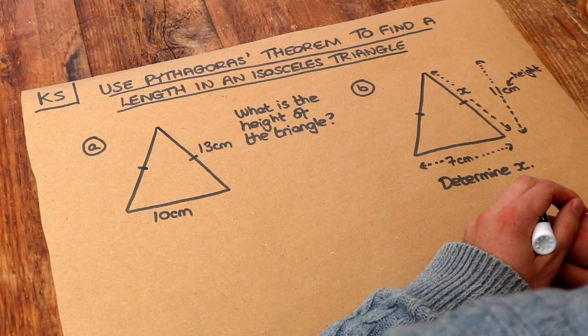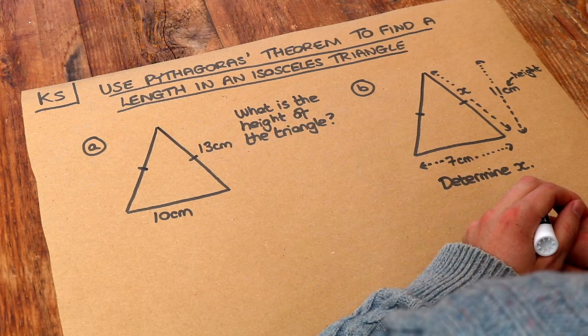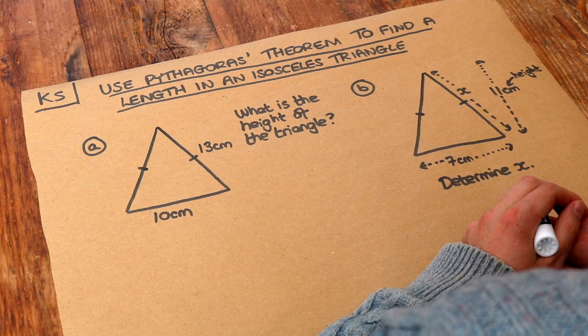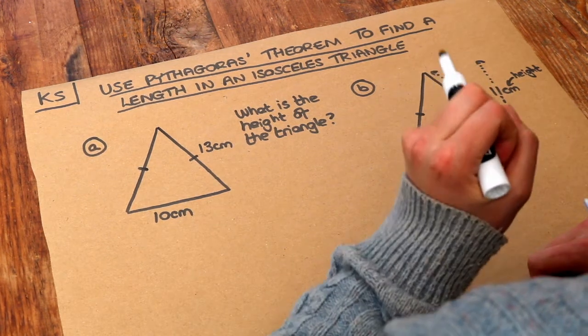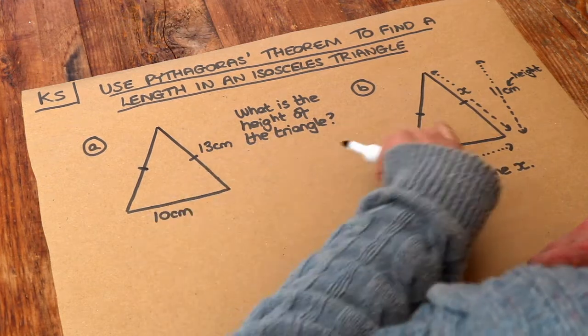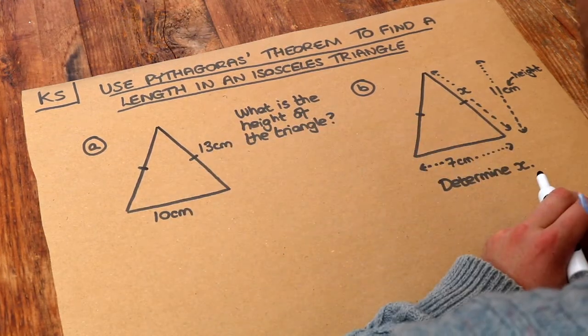Hello and welcome to this Dr. Foster Maths key skill video on using Pythagoras theorem to find a length in an isosceles triangle. Now remember, Pythagoras theorem involves right angle triangles, but these triangles here don't have a right angle, do they?